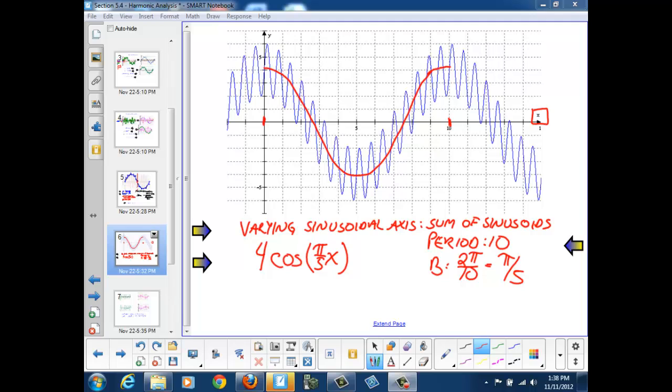For our second function, we're going to look at what's happening on the y-axis here. Because that will help us determine whether we're using a sine or a cosine for our second function. Now, we know that 4 cosine pi over 5x, when x is 0, will be 4.